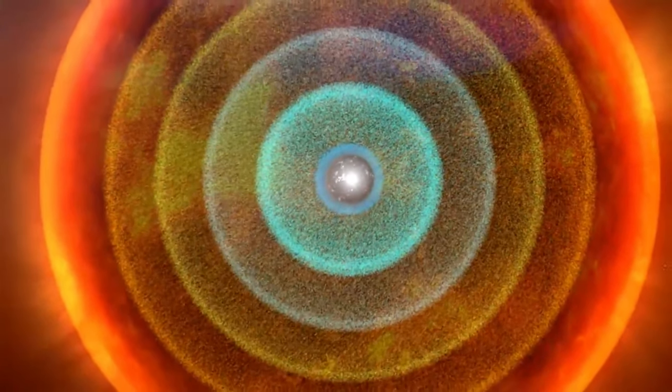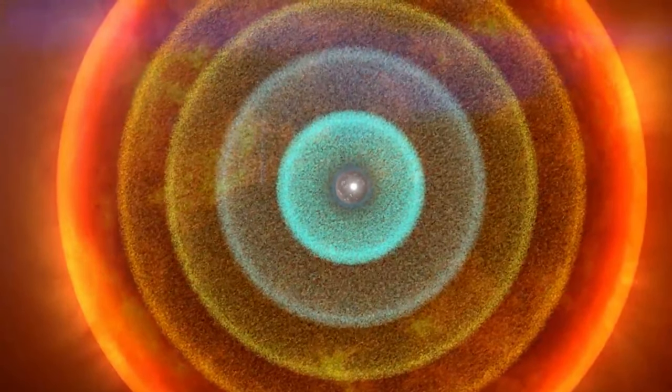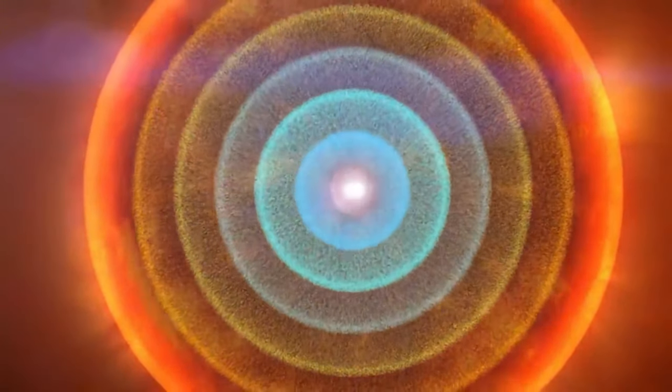Axions are hypothetical particles, incredibly lightweight and barely interacting with normal matter, making them notoriously difficult to detect. However, if they exist, they could hold the key to unlocking the secrets of dark matter. Here's where things get exciting.